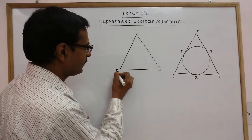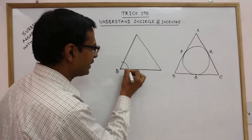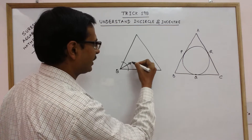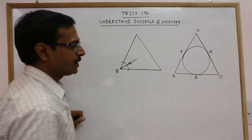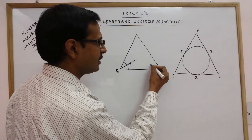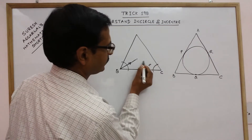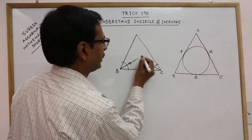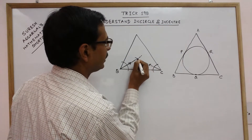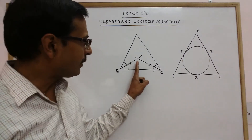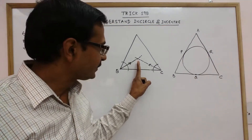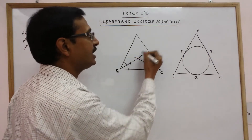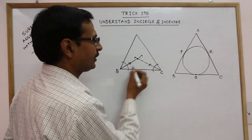This is angle B. If you draw the angle bisector of this angle, this is the angle bisector of angle B. Similarly, when you draw the angle bisector of angle C, this is the angle bisector of angle C. The point where the two angle bisectors meet each other is called the incenter of the triangle.